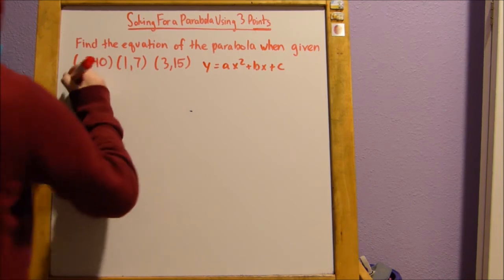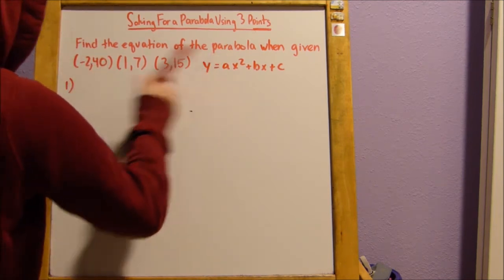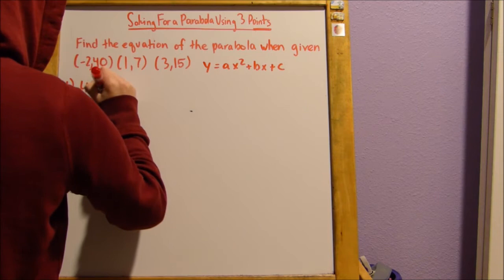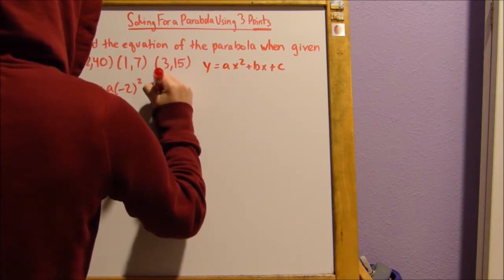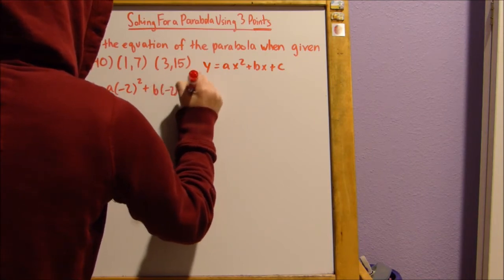So the first one, let's plug in stuff. Now, y is going to be 40. 40 equals a times x, negative 2 squared, plus b times negative 2 plus c.